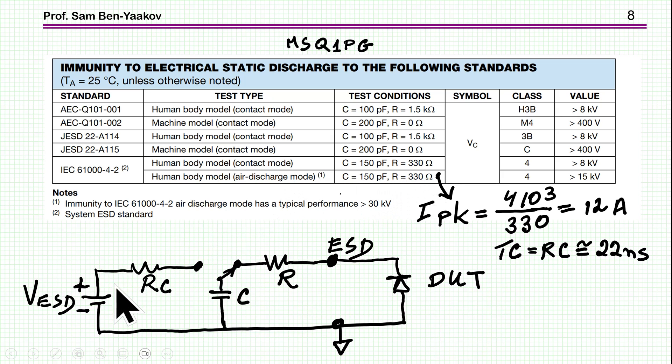Now let's say that the voltage is 4000 volt, the resistor is 330 ohm. So the current, maximum current, will be 12 amp. Now the voltage is very high of the capacitor, but this unit is supposed to break down, so it doesn't see the voltage. It has to break down and sustain the current. This is the requirement of this ESD-capable device.